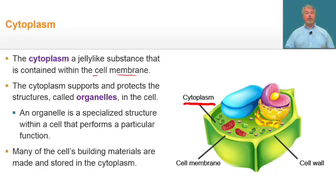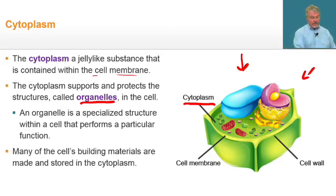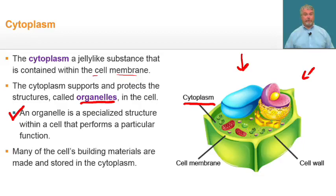The cytoplasm supports and protects structures called organelles. You can see several of them here, and we'll talk more about them later. An organelle is a specialized structure within a cell that performs a particular function. It's also in the cytoplasm where the cell's building materials are made and stored.